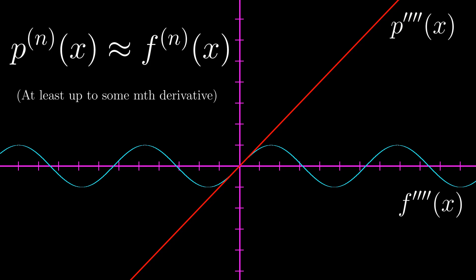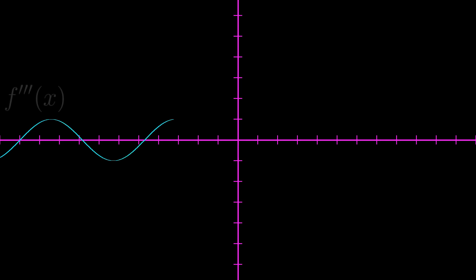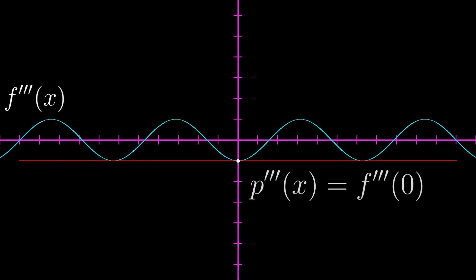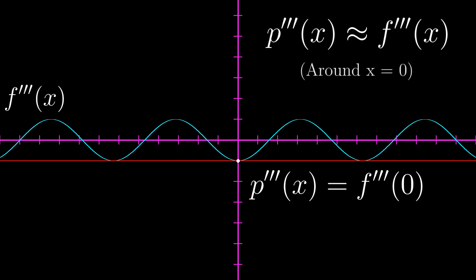So using this idea, we can start making our approximating function p of x. For example, say we let the third derivative of p of x equal to the third derivative of f of x at x is equal to 0. Next, consider the error function for this derivative set — that is, the difference between the actual function and our approximation. As x approaches 0, the error function also approaches 0, which implies that for values near x is equal to 0, the third derivative of p is equivalent to the third derivative of f.